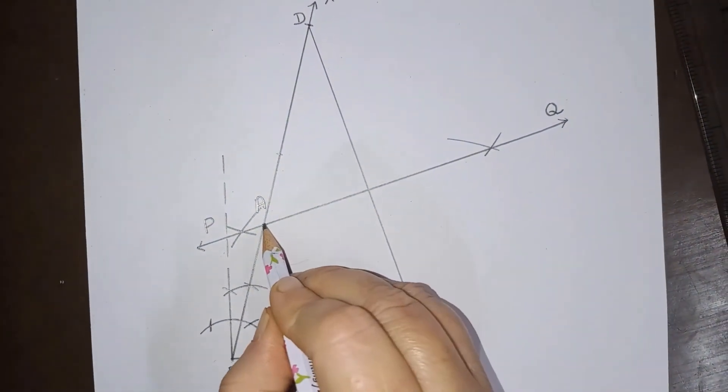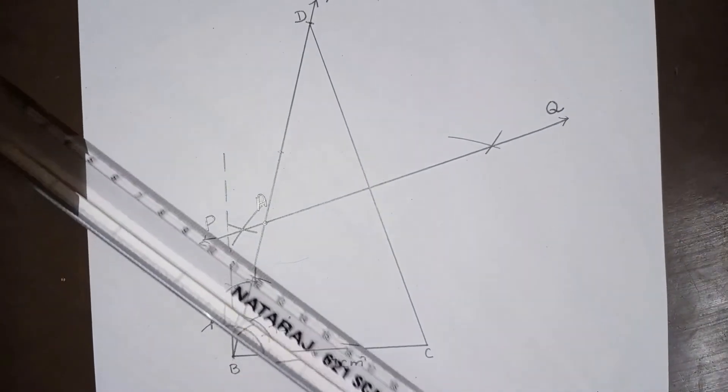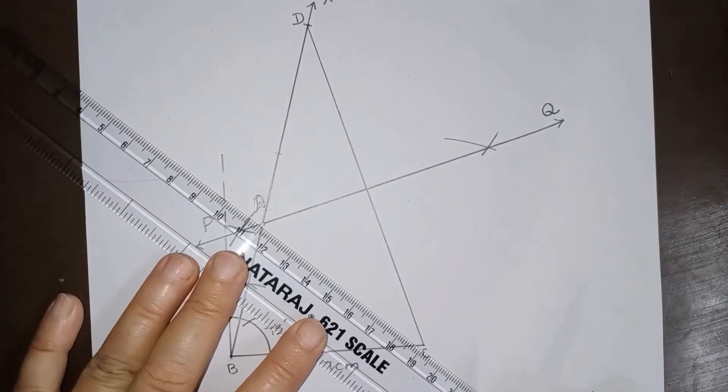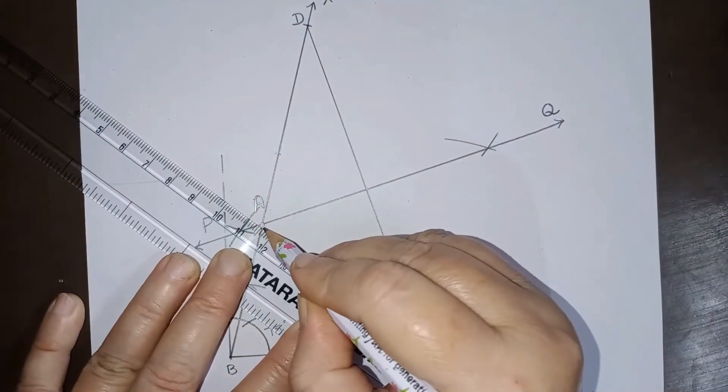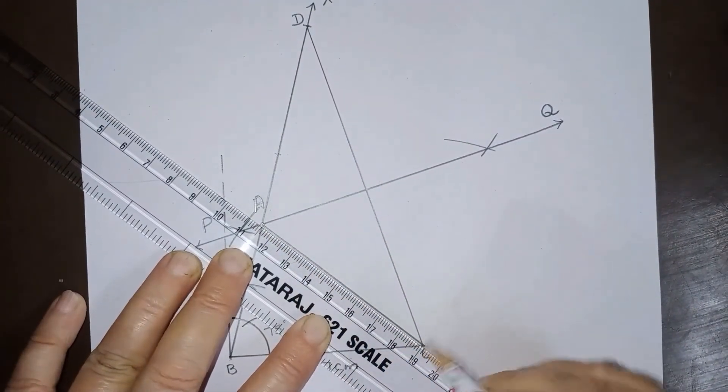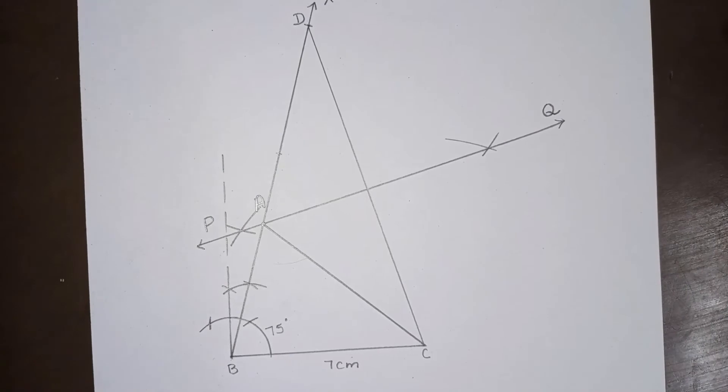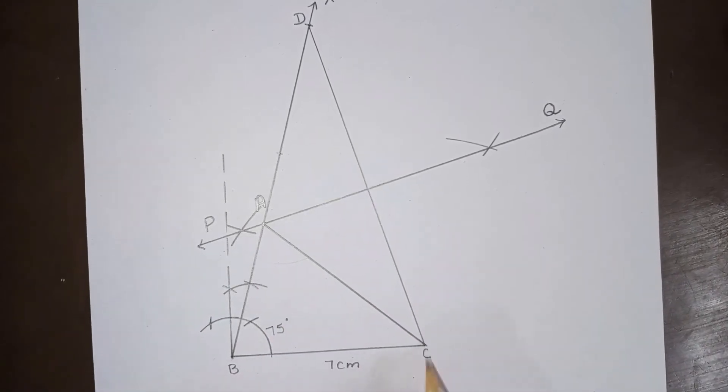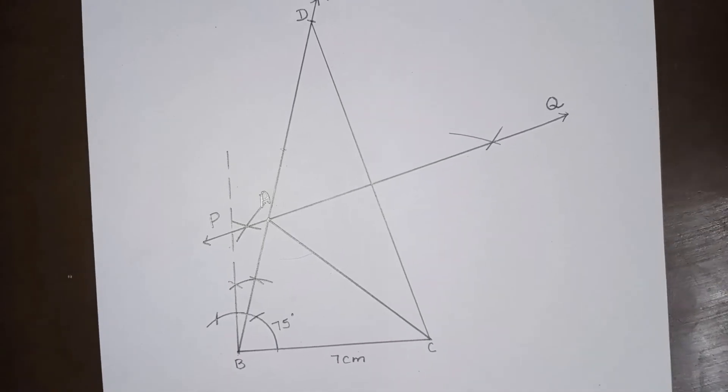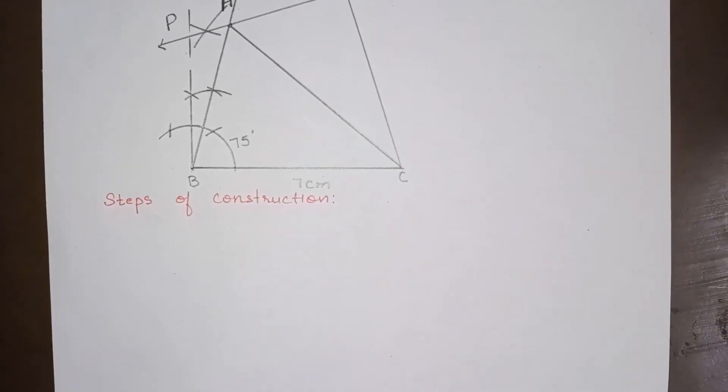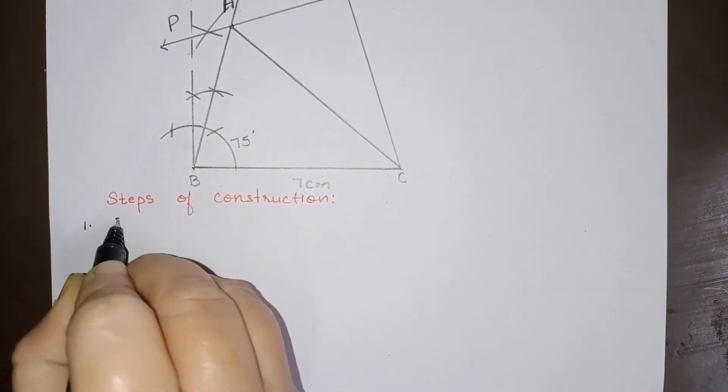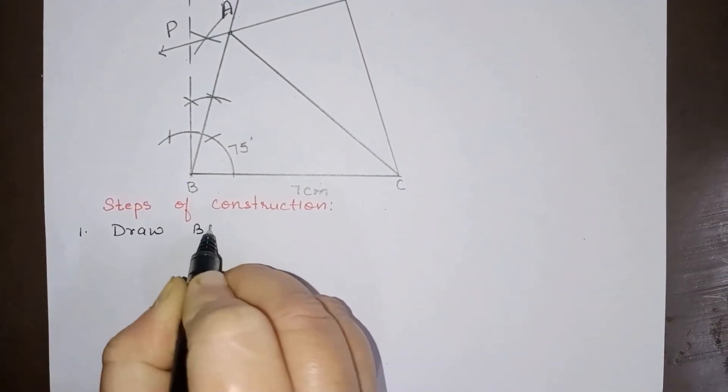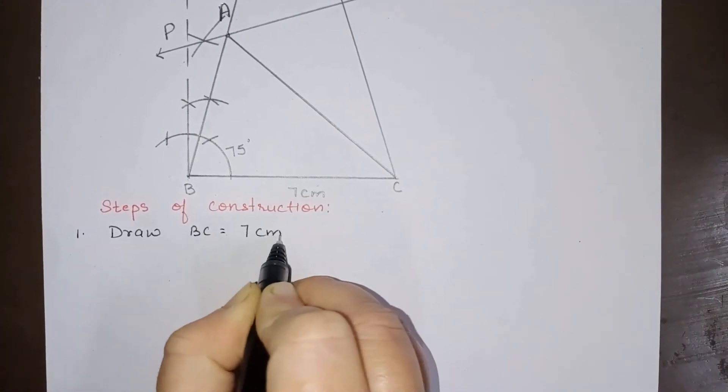Now I will join AC. So this AC is joined. So this triangle ABC is our required triangle. So let us write steps of construction. So our first step is draw BC equals 7 centimeters.